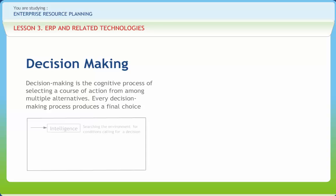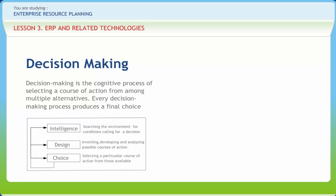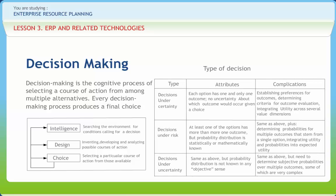In the intelligence phase: gather data, identify objectives, diagnose problems, validate data, and structure the problem. Next is design: gather data, manipulate data, quantify objectives, generate reports, generate alternatives, and assign risks or values to alternatives. Then choice: generate statistics or alternatives, simulate results of alternatives, explain alternatives, choose among alternatives, and explain the choice. Go through the table given in the slide for types of decisions.